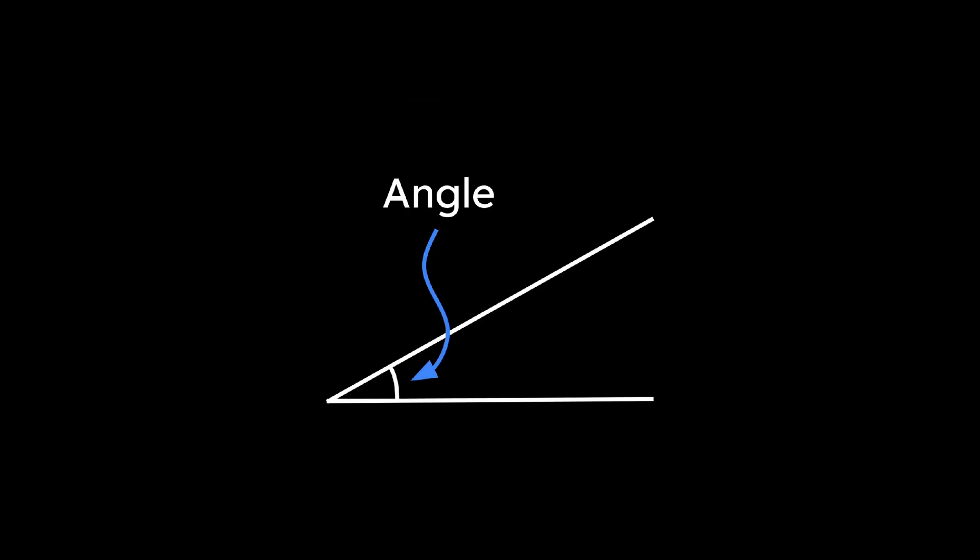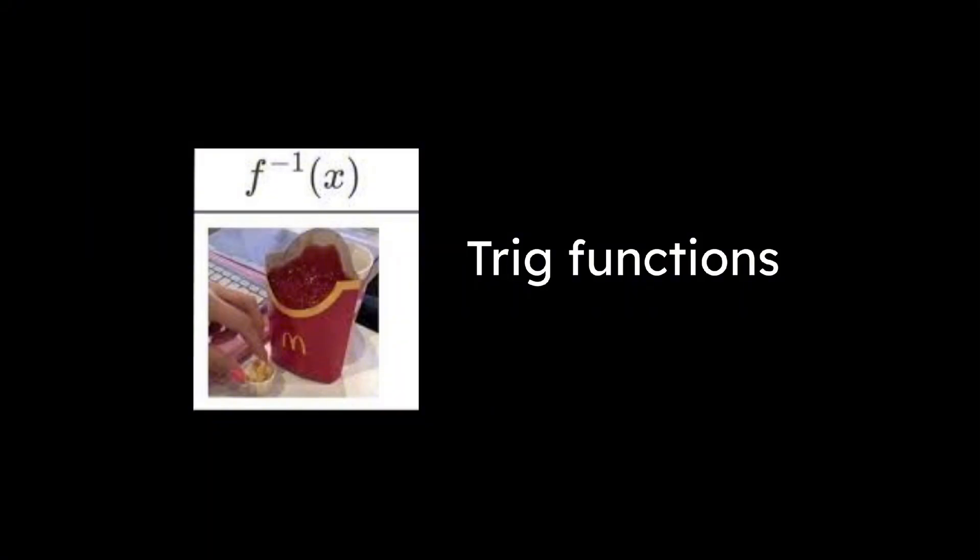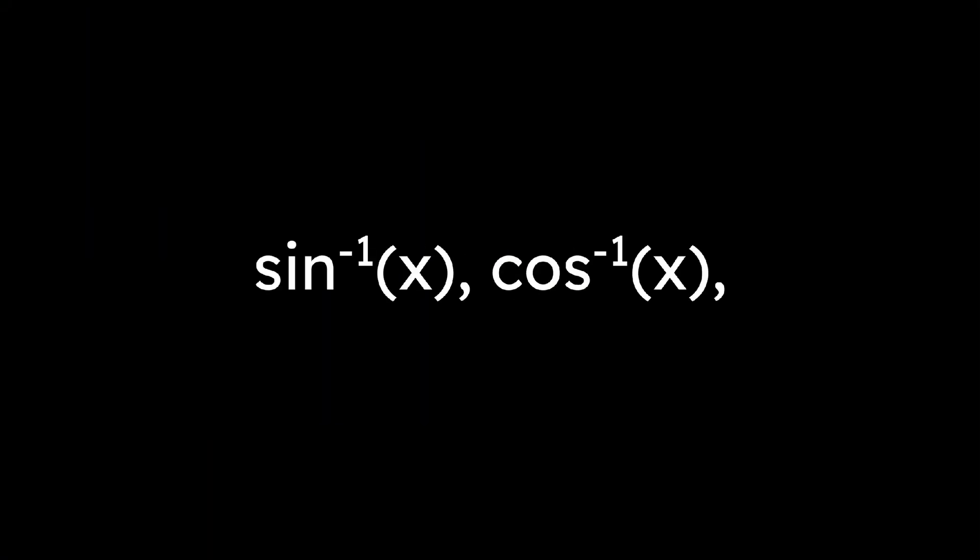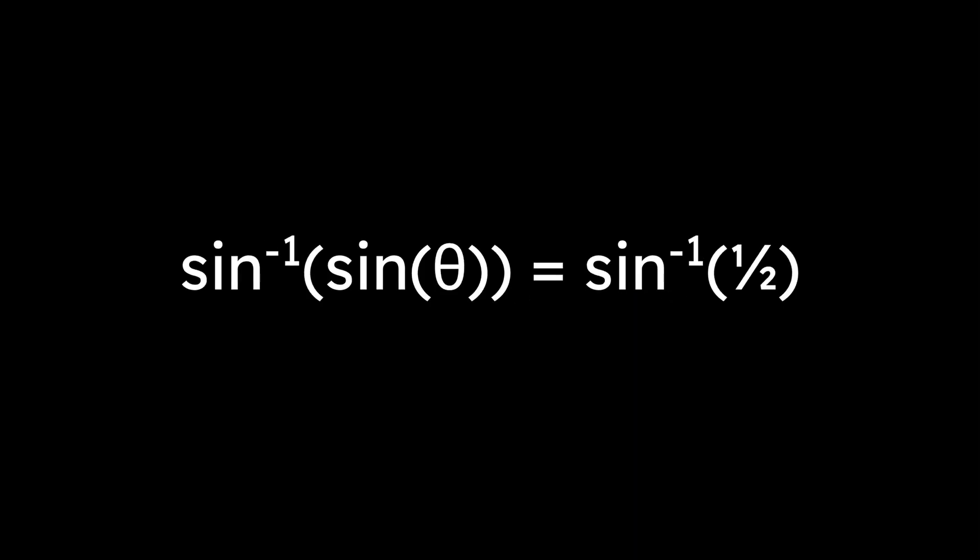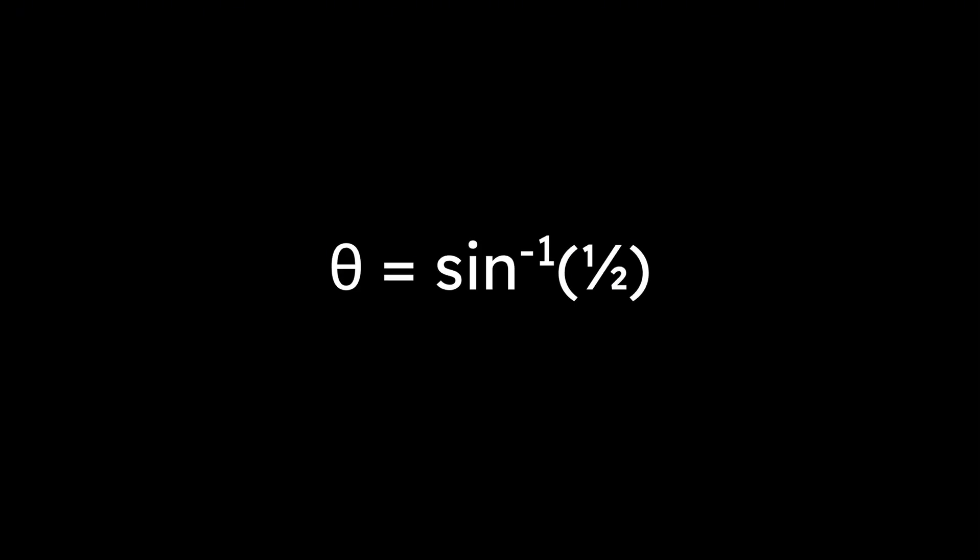Sometimes, instead of starting with an angle, you're given a value and need to find the angle that created it. That's where inverse trig functions come in. Sine inverse, cosine inverse, and tangent inverse take a ratio and return an angle. For example, if sine theta equals 1 half, you can take the sine inverse of both sides, giving theta equals sine inverse of 1 half, or 30 degrees.